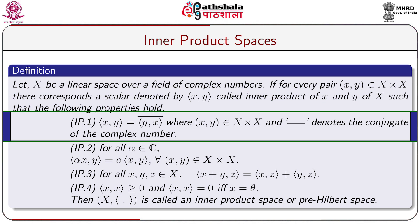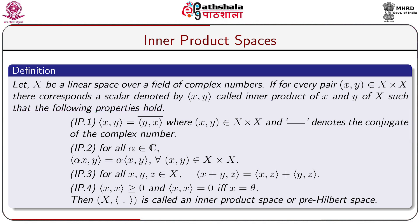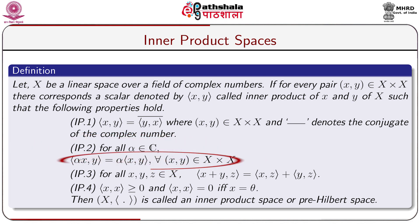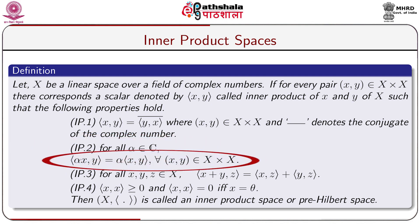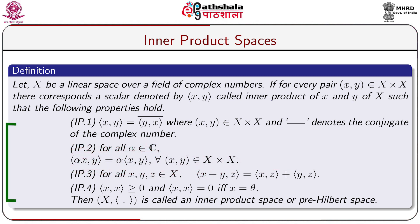Axiom IP1: ⟨x, y⟩ = conjugate of ⟨y, x⟩, where x, y belongs to X cross X, and bar denotes the conjugate of the complex number. Axiom IP2: for all alpha belonging to C, ⟨alpha·x, y⟩ = alpha·⟨x, y⟩ for all x, y belonging to X cross X.